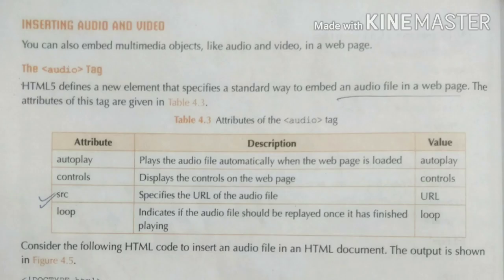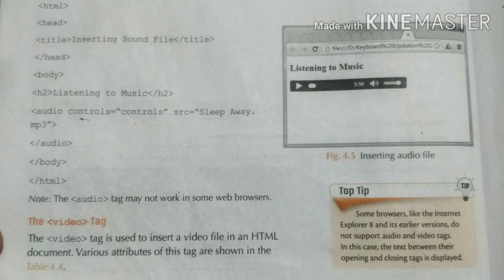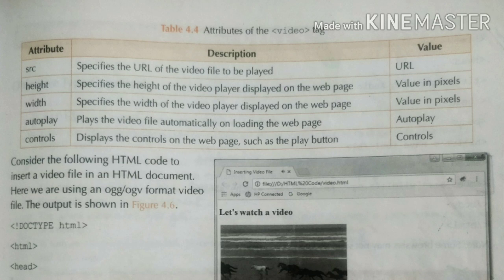We learned about inserting images and inserting frames. The next topic is inserting audio and video. The audio tag is very simple — we need to use the audio tag if we want to insert any audio file in our webpage. There are some attributes given here which will help you to insert an audio file. The video tag is used to insert a video file in an HTML document. Various attributes of these tags are shown in figure 4.4 — attributes include src, height, width, autoplay, and controls.